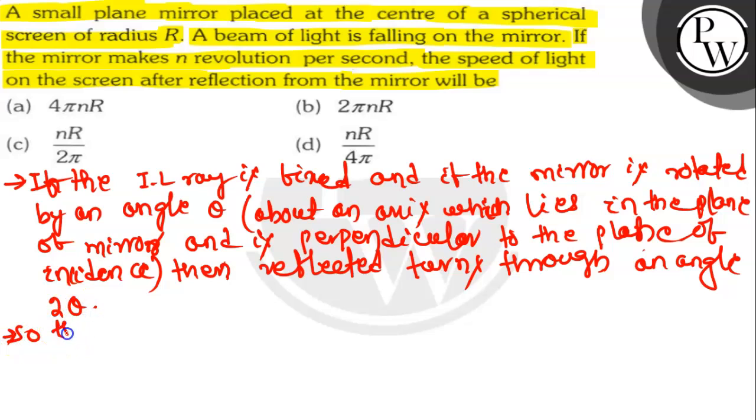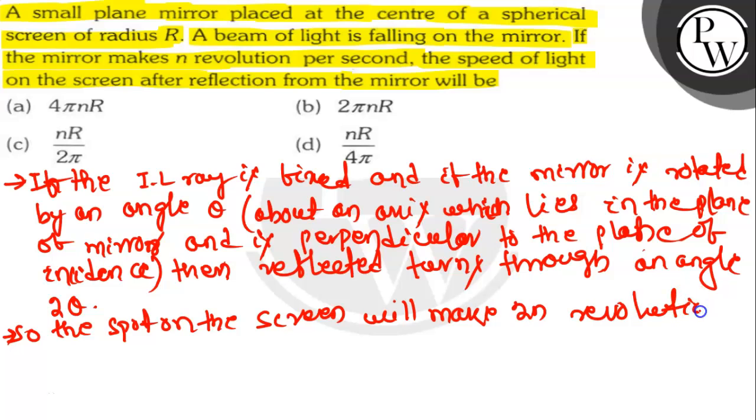So the spot on the screen will make 2n revolution per second. So here, omega dash is equal to 2 omega.